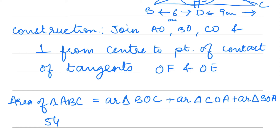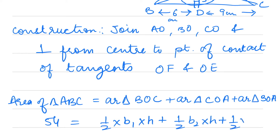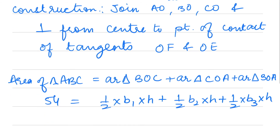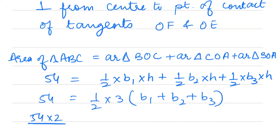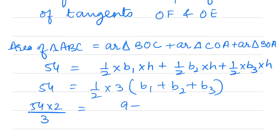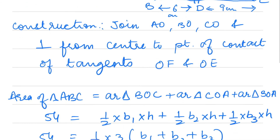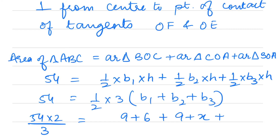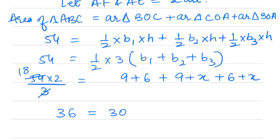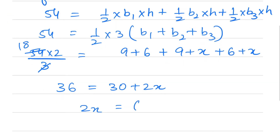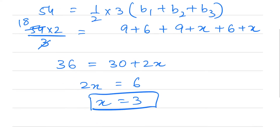Area = 54 sq cm = half × base1 × height + half × base2 × height + half × base3 × height, with height = radius = 3 everywhere. So 54 = (3/2)(b1 + b2 + b3). This gives 36 = (9+6) + (9+x) + (6+x) = 30 + 2x. Therefore 2x = 6, so x = 3.